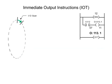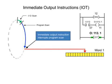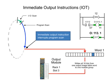The immediate output instruction operates similar to the immediate input instruction. As the scan is interrupted, the bits of the addressed word are updated and the field outputs are energized or de-energized according to the output image table.